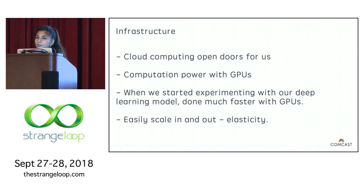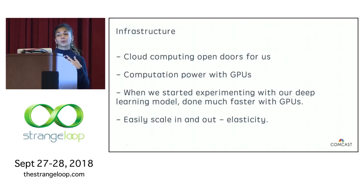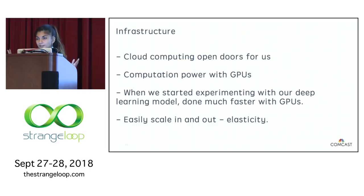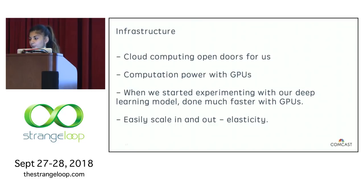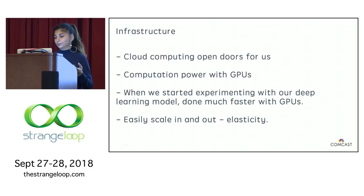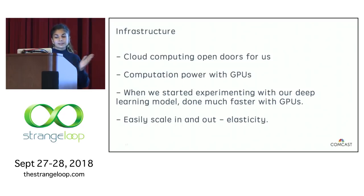Infrastructure: I alluded to this earlier — we decided to migrate to the cloud. Cloud computing opened doors for machine learning not just for us. The computation power with GPUs and the ease of spinning up instances accelerated our growth and speed in resurrecting this platform. We have two models: a core collaborative filtering model and a deep learning model. There's no way we would have been able to experiment with the deep learning model on physical infrastructure. Migrating to AWS was key — especially because of GPUs and elasticity.